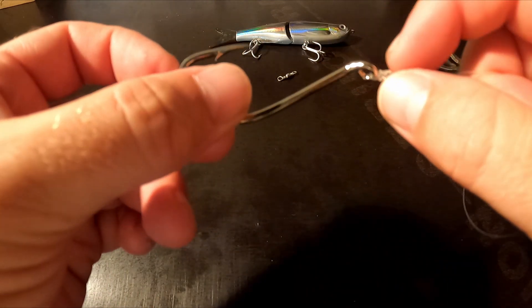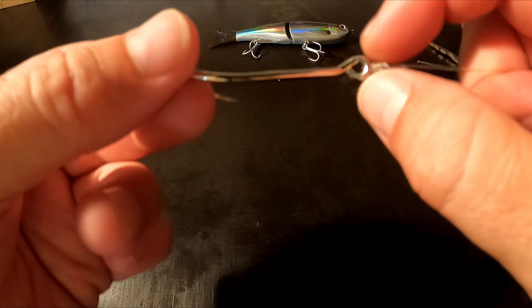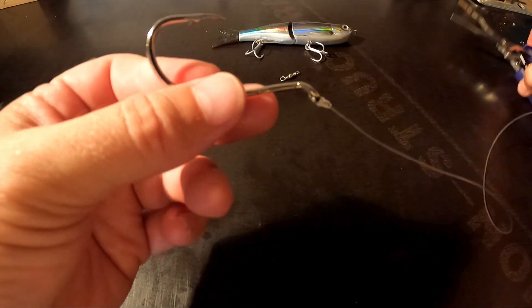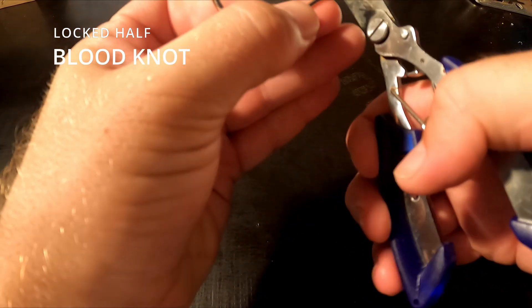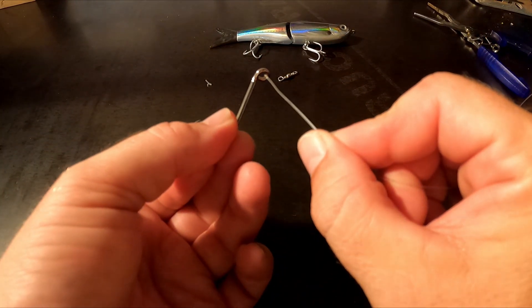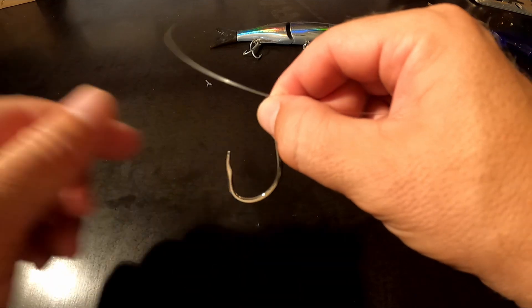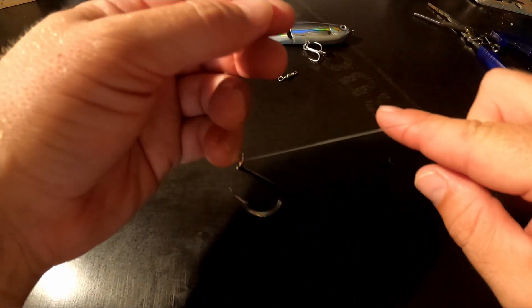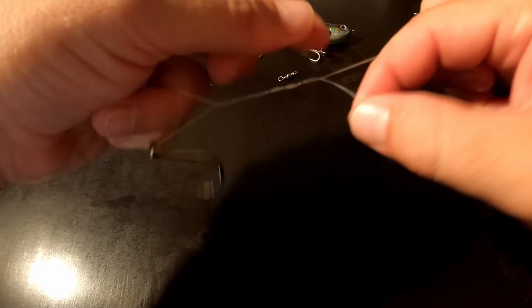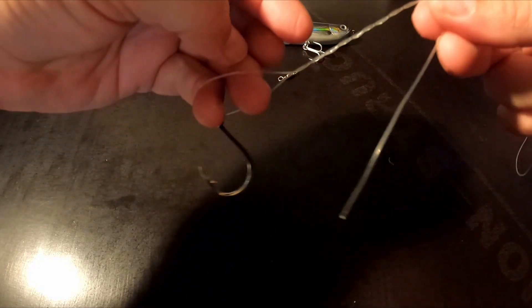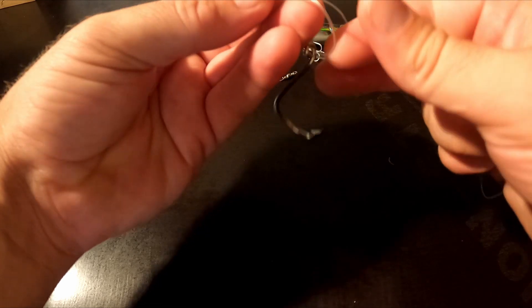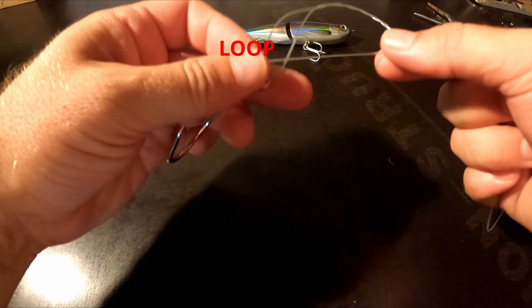Occasionally it can slip, especially on thicker gauge hooks like this, so there's an alternative knot called the locked half blood knot and I'll quickly show you how to tie that. Again, same process: pass your line through the eye of your hook and you will do the five wraps like we just did. So one, two, three, four, five.